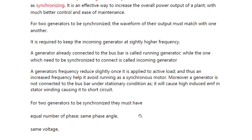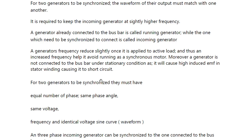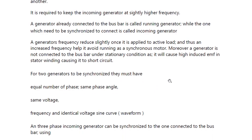For two generators to be synchronized, three conditions must be met: equal number of phases, same phase angle, and identical voltage — meaning the sine curve or waveform has to be the same. Additionally, if the running generator is connected with RYB phase sequence, then the incoming generator must also be connected in the same fashion — R to R, Y to Y, B to B. It cannot be R to Y.